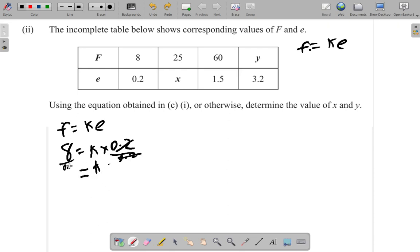You divide by 0.2. What is 8 divided by 0.2? We get 40. So so far, the constant is 40.